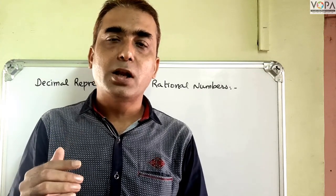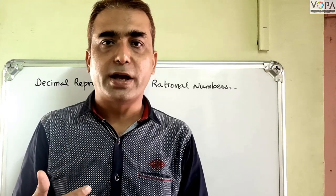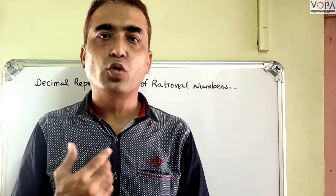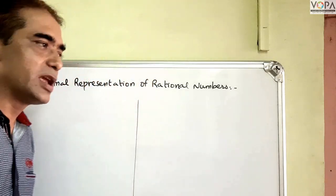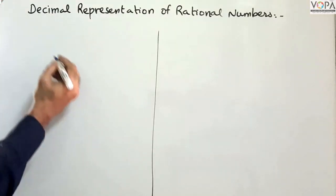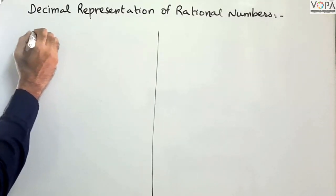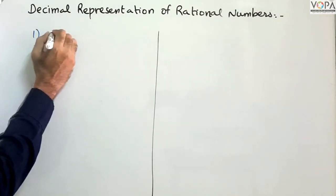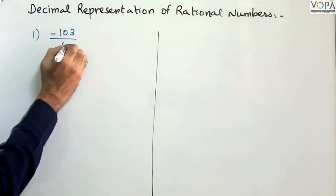How does a rational number come to be understood in decimal form? Let's start with one example. Suppose this rational number is negative 103 upon 5.